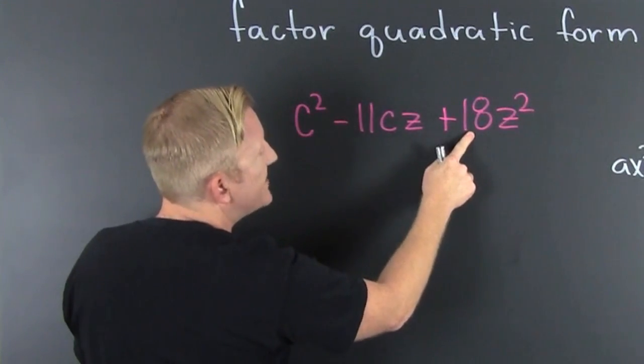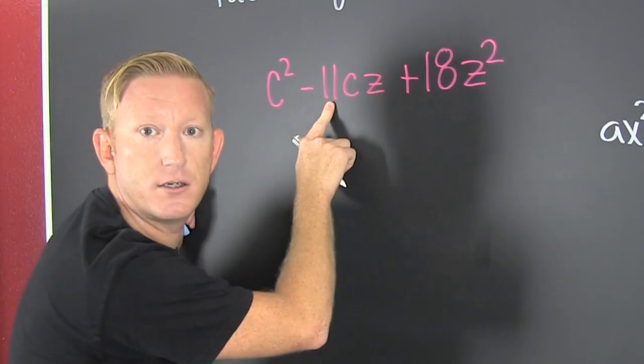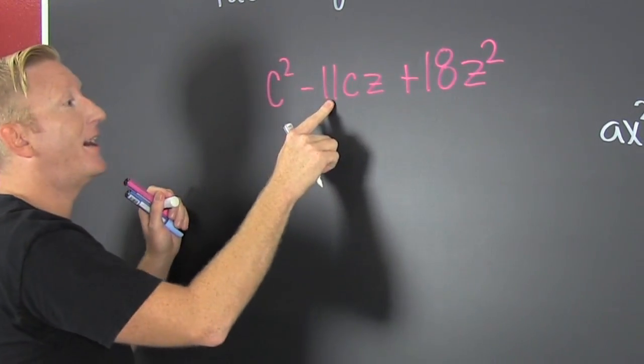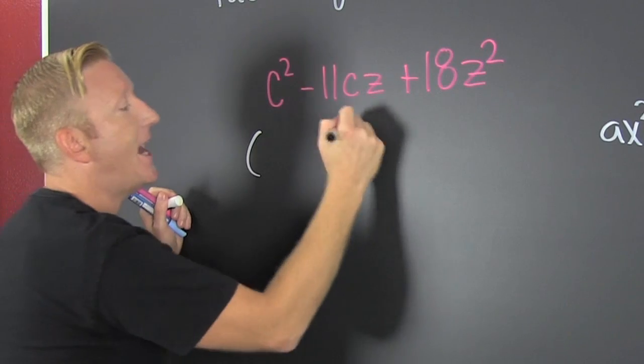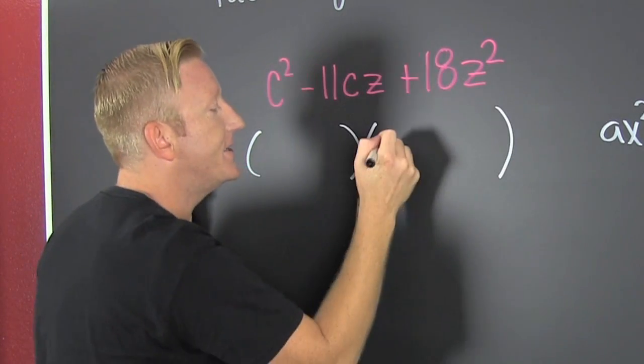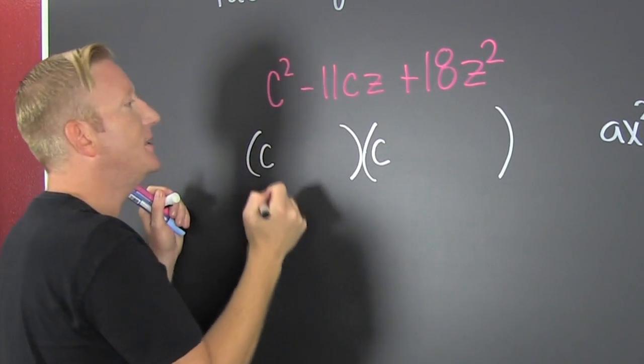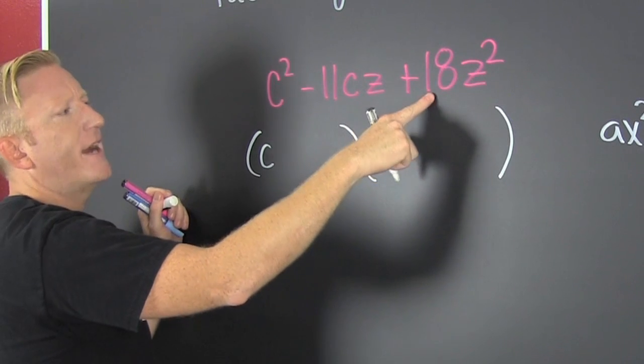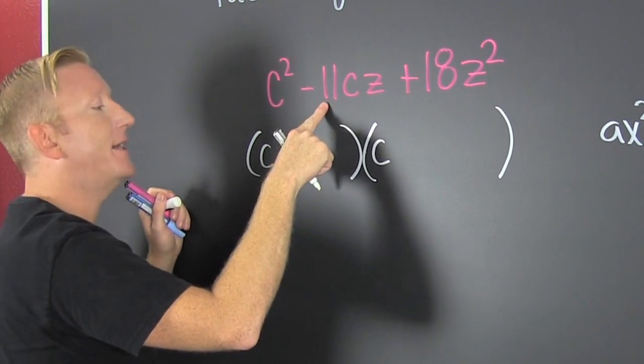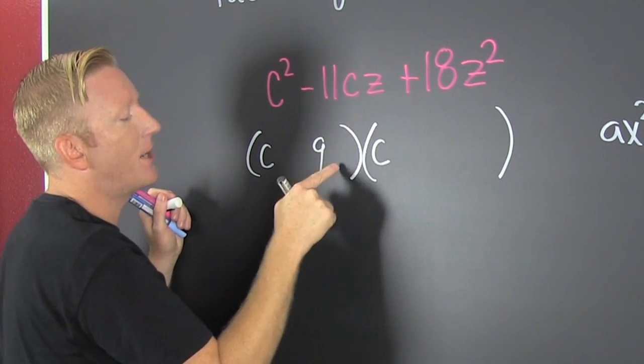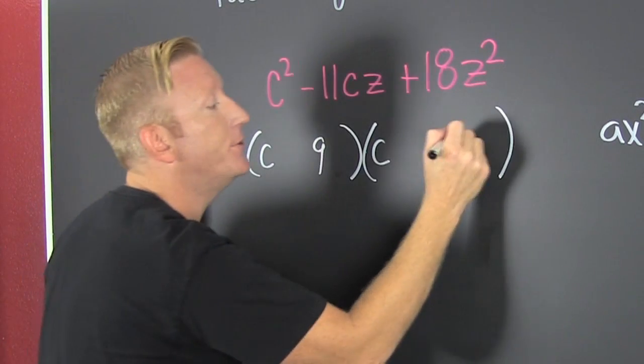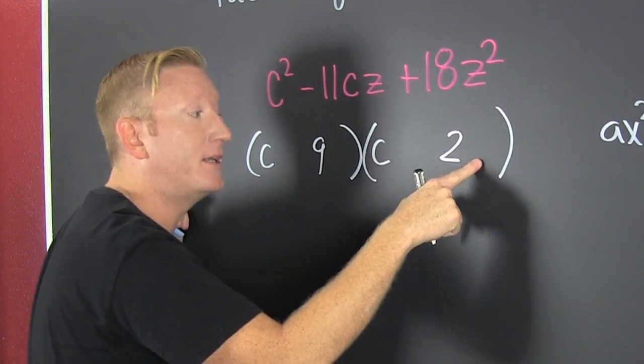So we're looking for the factors of 18 that add to 11. Are there any? So you gotta get that. You gotta get that C and C. Whoa. Factors of 18 that add to 11 are 9 and 2. So I'm gonna put a 9 there but I'm gonna leave some room. And then I'm gonna put a 2 there but I'm gonna leave some room.